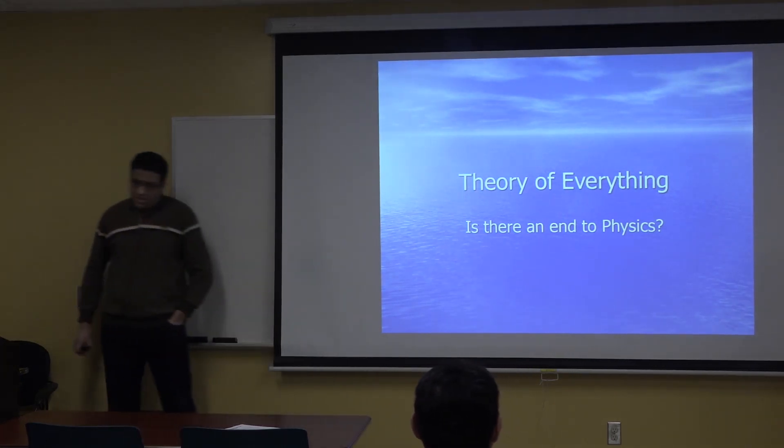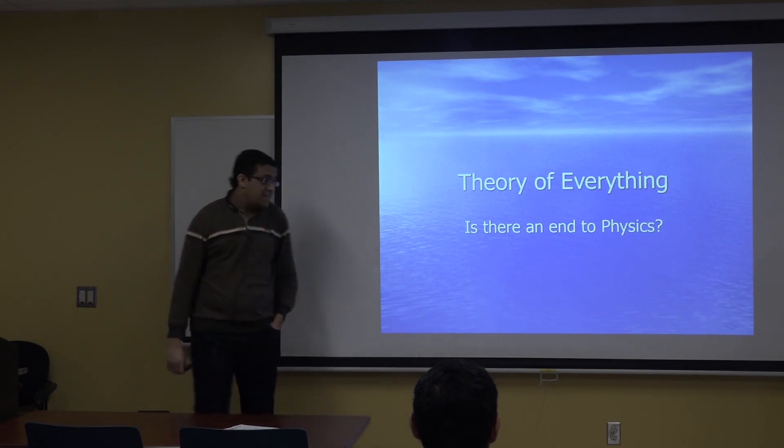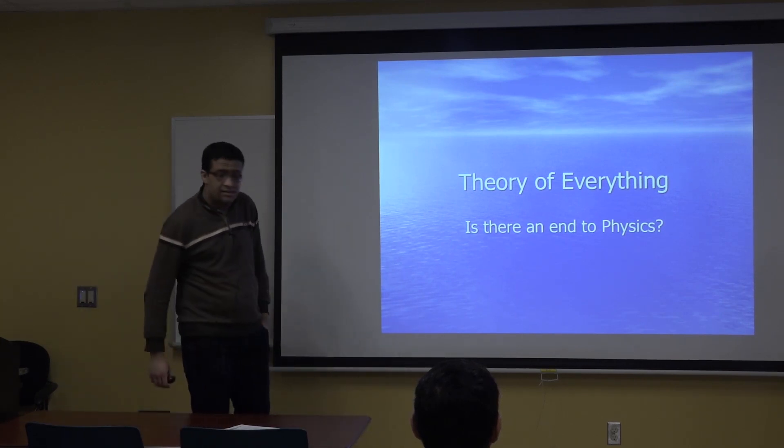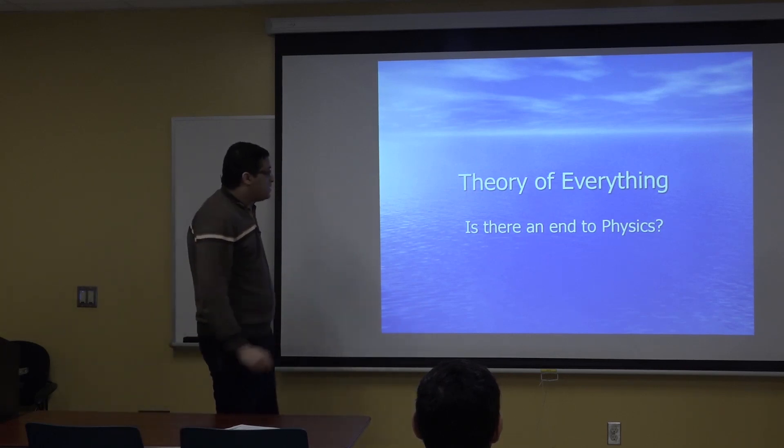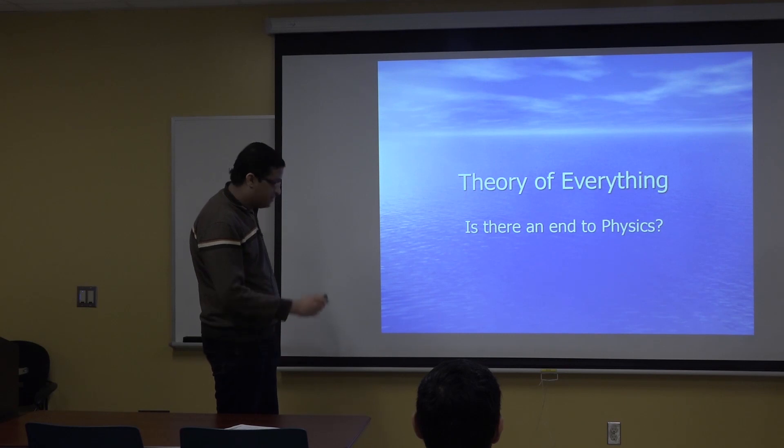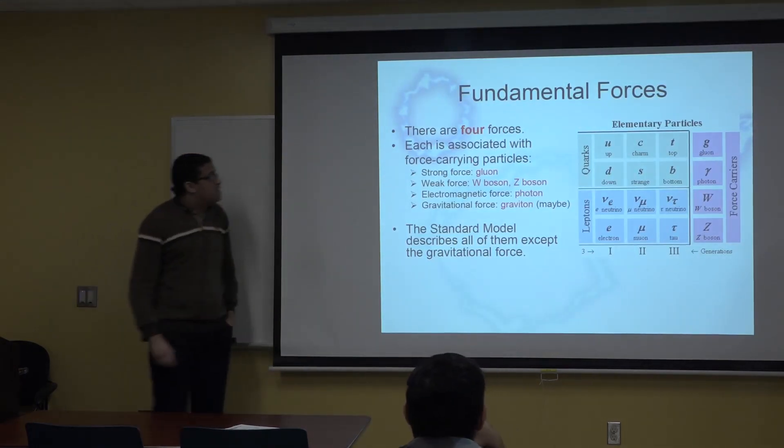Secondly, I will go through the Standard Model and general theory of gravity, and what's the problem of unification. What's the theory of everything? What are the strong possibilities of this theory of everything? I will discuss one of the most leading candidates of theory of everything, which is string theory. After that, the predictions of the theory and the general conclusion. The first question which comes to mind when we discuss theory of everything is, is there an end to physics? We will answer that.